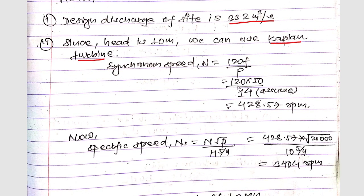The formula to calculate synchronous speed is N = 120f/P. With 120 × 50 / 14, assuming the pole value as 14, we get the synchronous speed as 428.57 rpm.